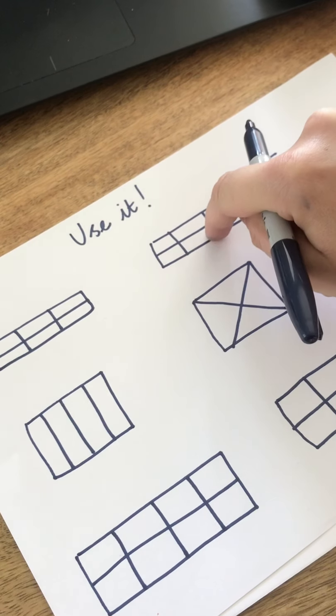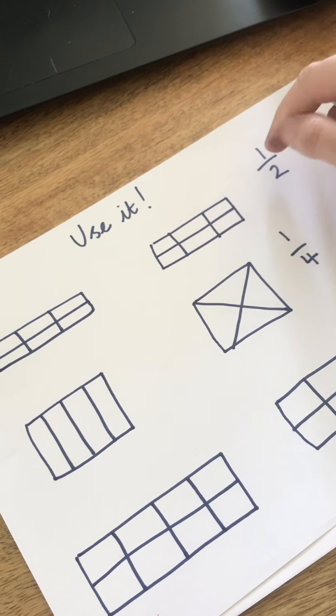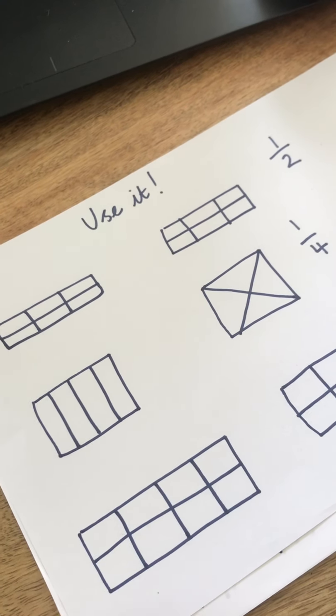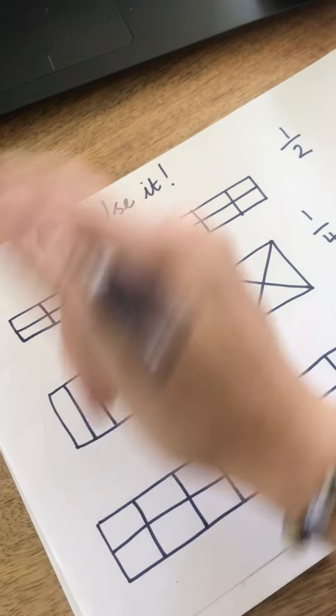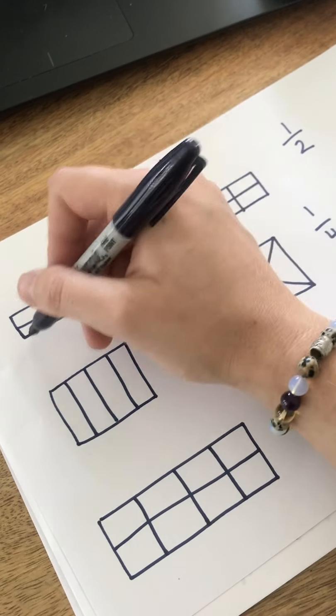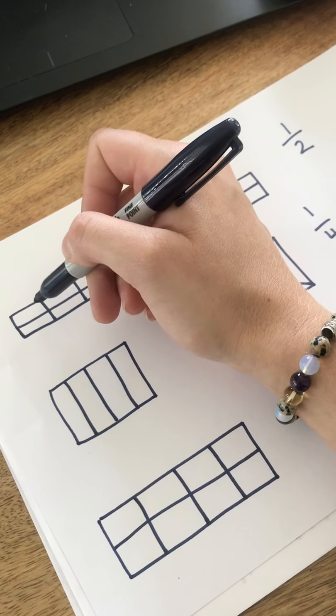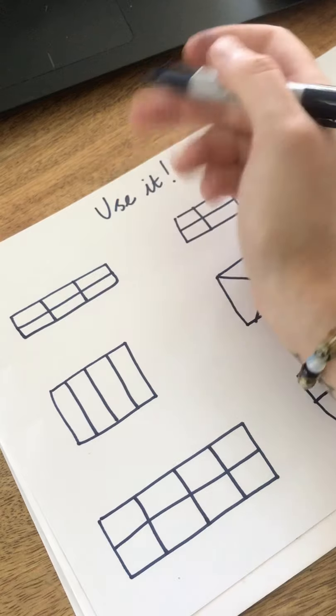Now this is tricky because these shapes haven't been split into two equal parts. There's two ways to work this out. I'm going to show you one way on here. Here's my whole shape and it's actually been put into one, two, three, four, five, six parts.